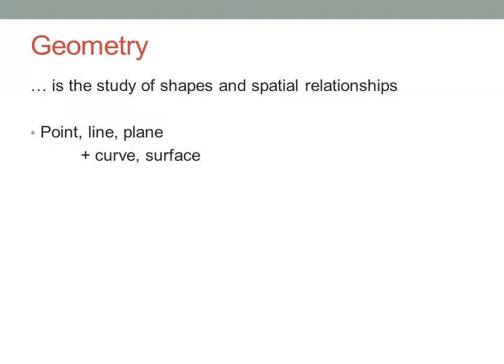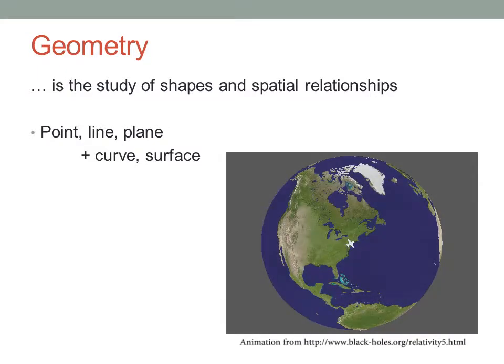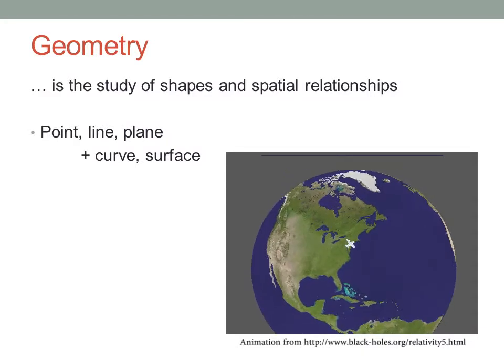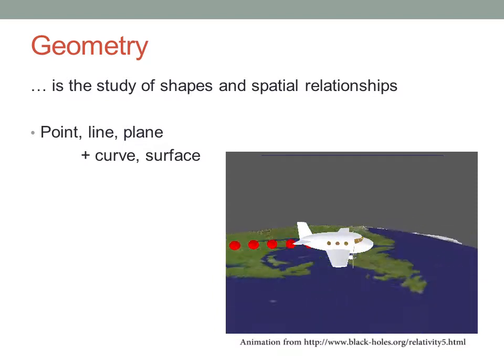A curve is just a path that looks locally like it's a straight line. Think about the surface of the Earth. The shortest path between two cities might look like a straight line on a map, but it's actually a curve across the surface of the Earth.